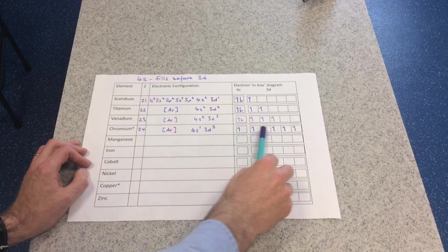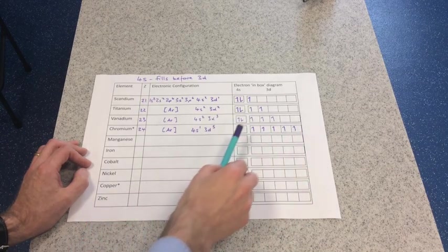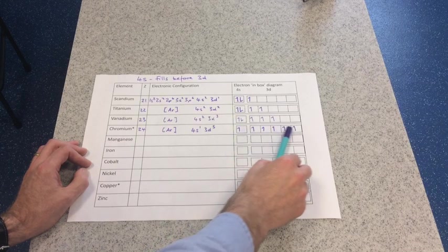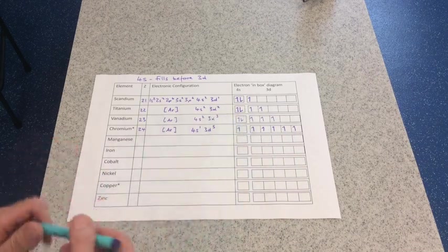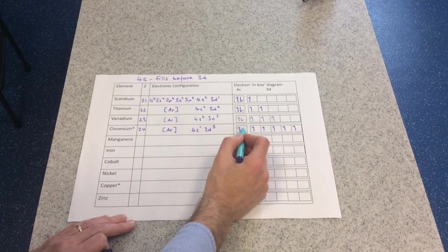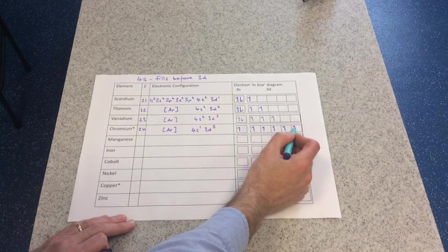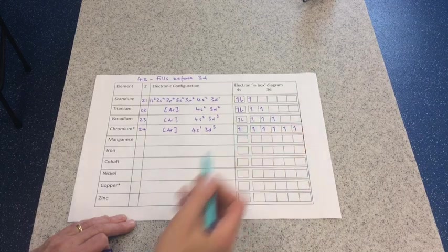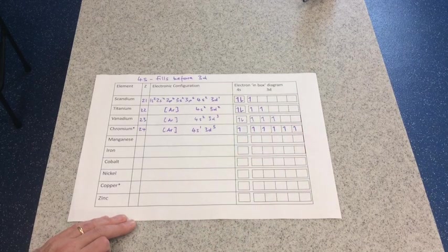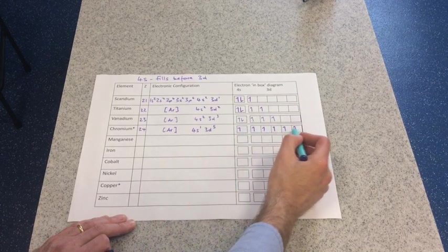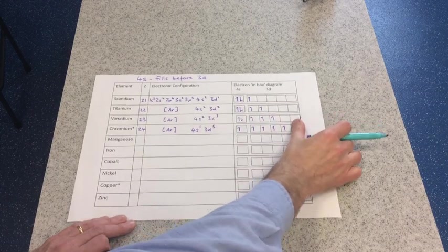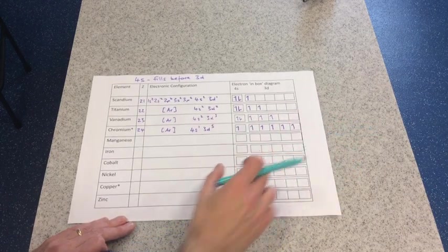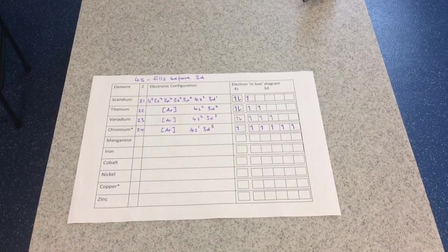So if you have a look at the electrons in box representation of that, chromium is much more stable if the 4s electron, one of the 4s electrons, is actually promoted from here into the 3d subshell. So it would rather have this half-filled configuration. So just be careful with chromium, because it's a bit awkward.